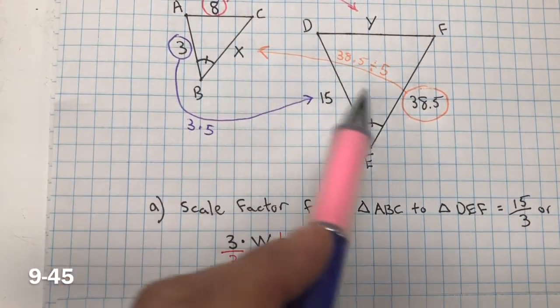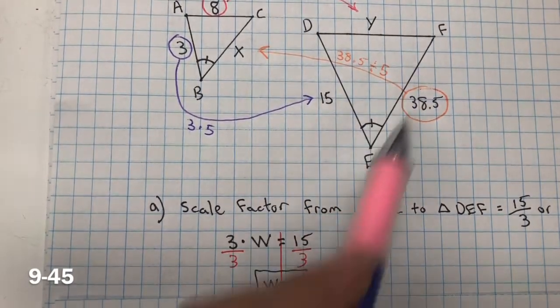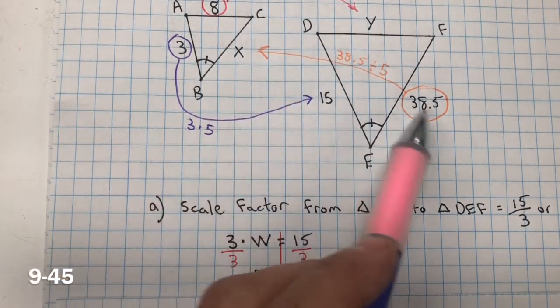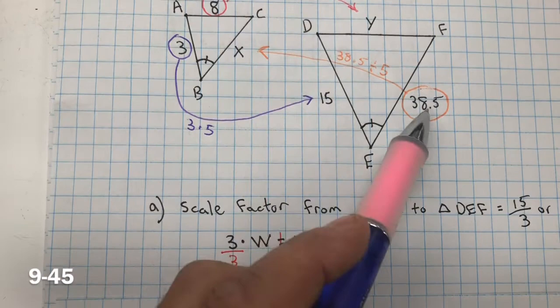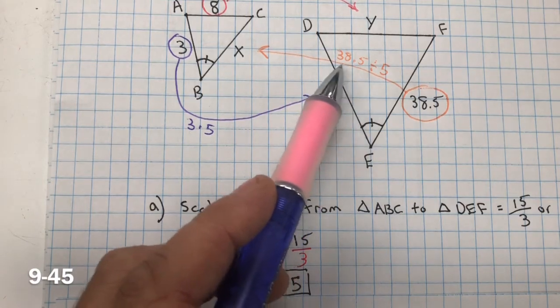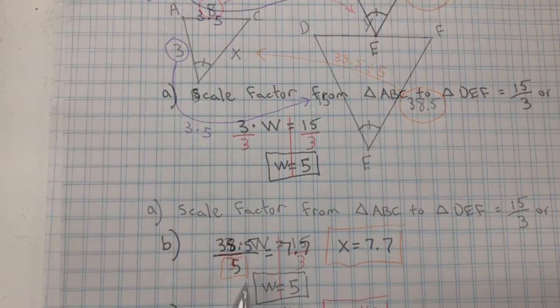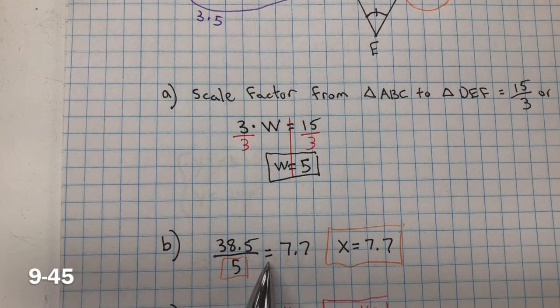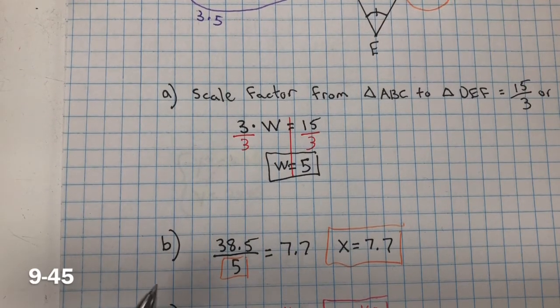In order to find X, well, we have the big value, the length for the big triangle, and so to go to its corresponding side, we know we're going to have to decrease. So we're really going to do the inverse of multiplying by 5. We're going to divide by 5. And 38 and 5 tenths divided by 5, here we have 38 and a half divided by 5 equals 7 and 7 tenths. So X is going to equal 7 and 7 tenths.